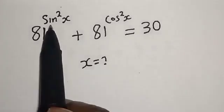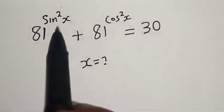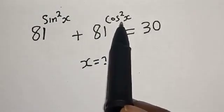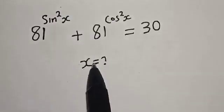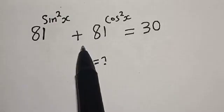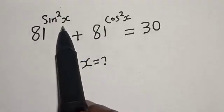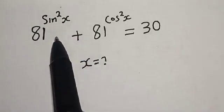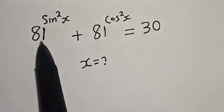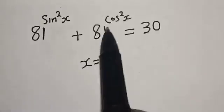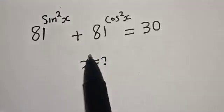81 raised to power sine squared x plus 81 raised to power cosine squared x is equal to 30. What is the value of x? Hi everyone, welcome to my class. In this class, we want to find the value of x from this given trigonometric equation: 81 sine squared x plus 81 cosine squared x is equal to 30.